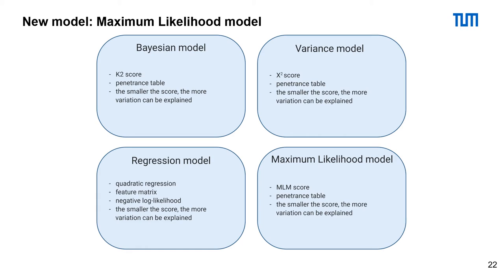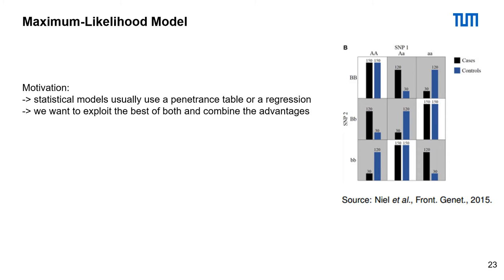We now want to include a new statistical model — we call it the maximum likelihood model. It uses the MLM score and a penetrance table. Here also, the smaller the score, the more variation can be explained. The motivation behind this was that statistical models usually use either a penetrance table or a regression, and we want to exploit the best of both and combine the advantages.